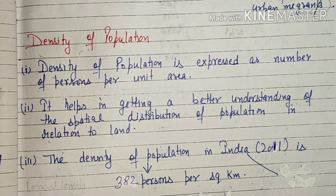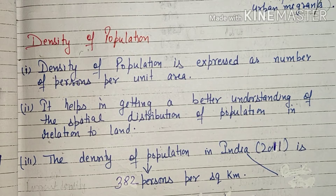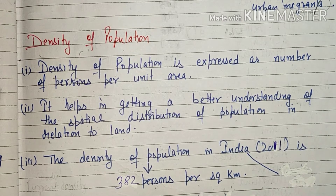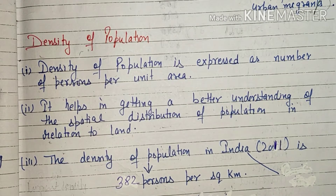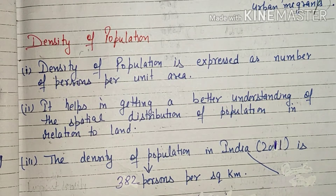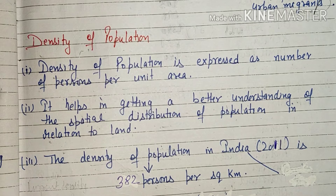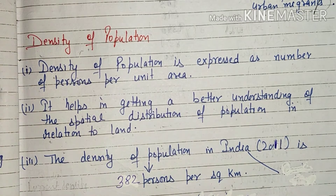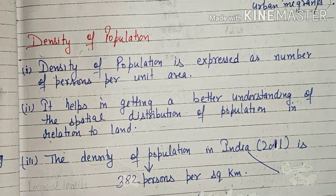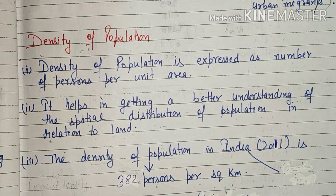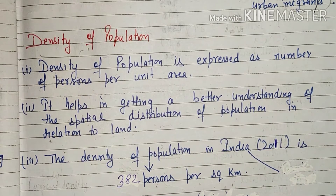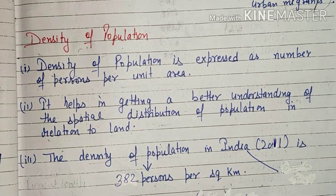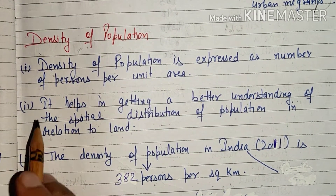Hi everyone, we are reading from Class 12 Geography — Indian People and Economy, Chapter 1: Population. The topics are distribution, density, growth and composition. We have already covered distribution of population in our previous video. Today we are starting with density of population. Let's begin.